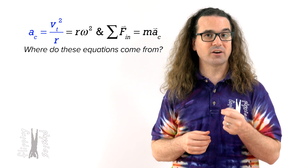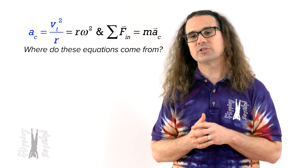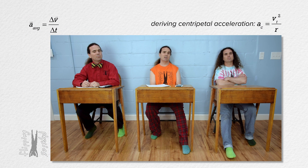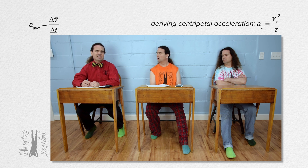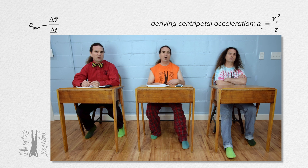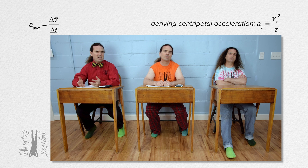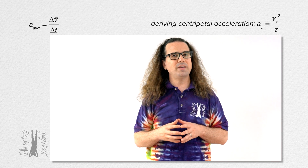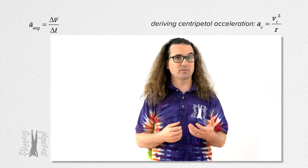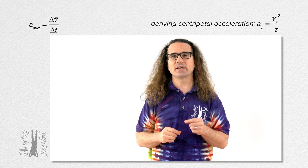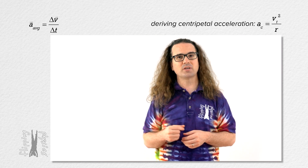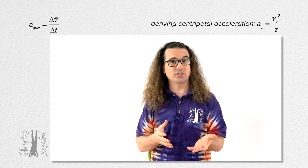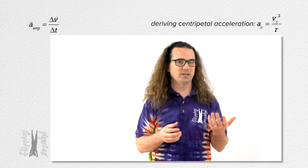In order to do that, we start with the equation for average linear acceleration. Average linear acceleration equals change in linear velocity over change in time, where both acceleration and velocity are vectors. Centripetal acceleration is a linear acceleration — it is the linear acceleration of an object moving along a circular path, always acting inward toward the center of the circle. Because centripetal acceleration is a linear acceleration, we start with the equation for average linear acceleration.